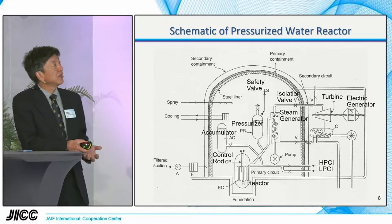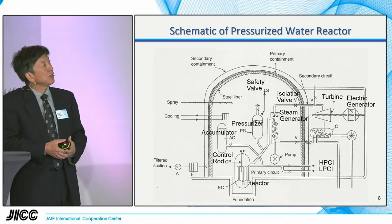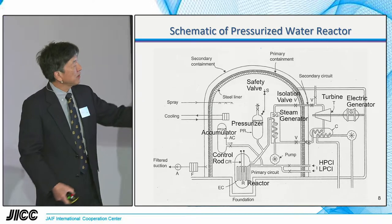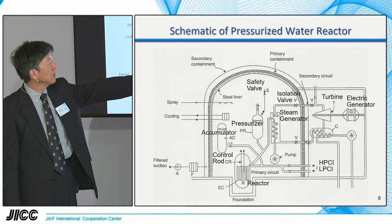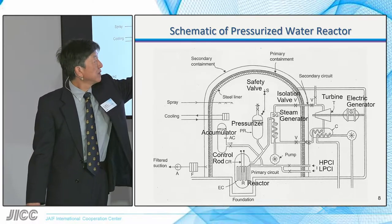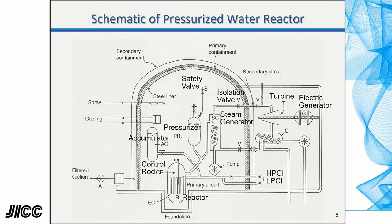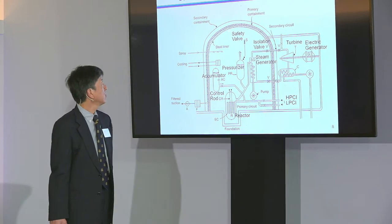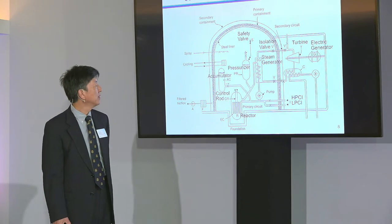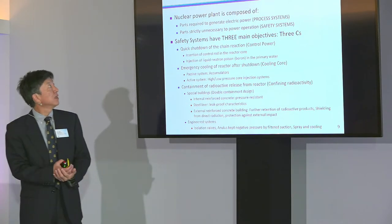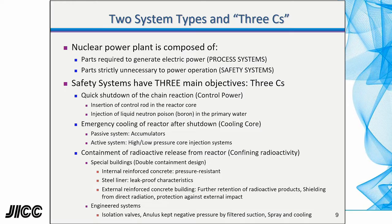Let's go back to nuclear. This is a schematic of a pressurized water reactor. Here is the reactor itself and the control rod, the primary system and steam generator, turbine and electric generator. The containment vessel is also shown. Yesterday I talked about the three Cs in safety design.